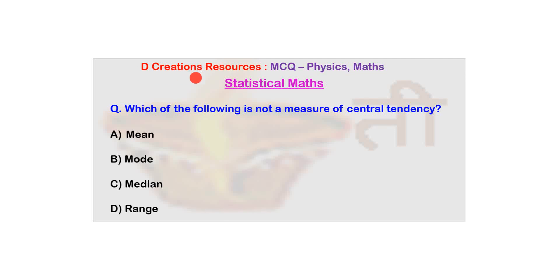Hello and welcome to the YouTube channel D Creations Resources. We are looking at multiple choice questions from physics as well as maths and also learning the concepts entailed in these questions. Today let us deal with a question from statistics. The question is, which of the following is not a measure of central tendency?